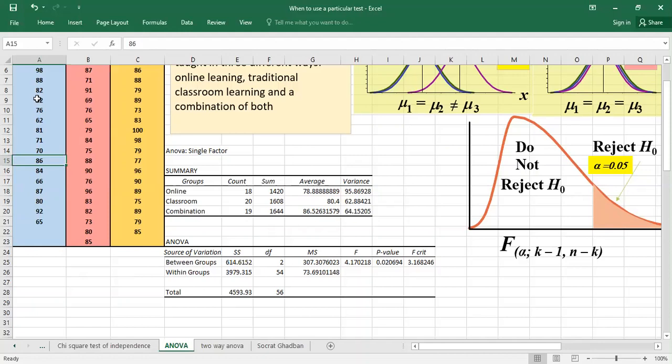Here we're having group one and we're having the average of group one. So, the difference squared is the sum of squares within groups.